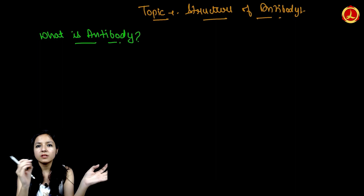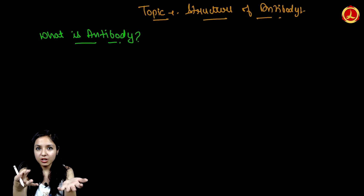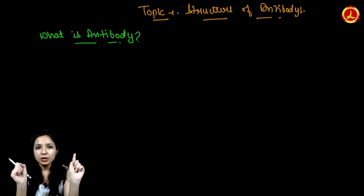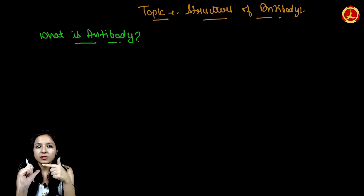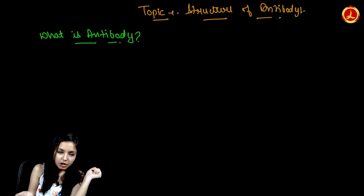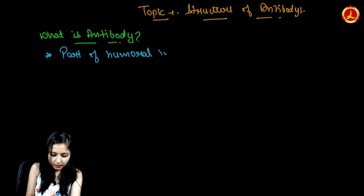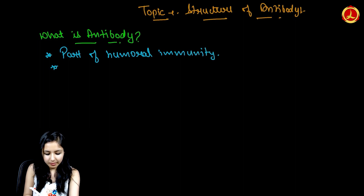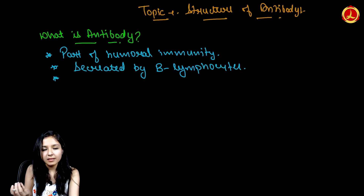When our body recognizes a foreign particle or microorganism, our body will produce antibodies. Those antibodies are part of humoral immunity, which are secreted by B lymphocytes — a type of white blood cell. Antibodies are secreted in response to an antigen.